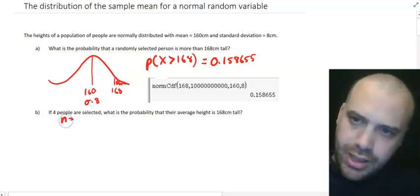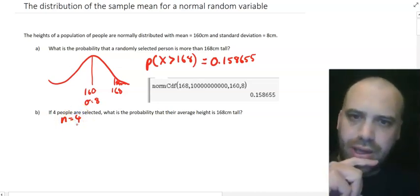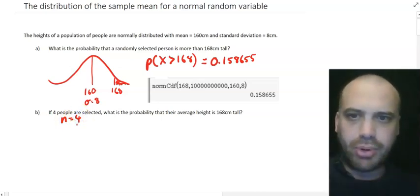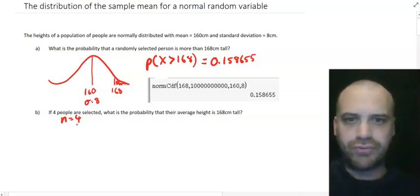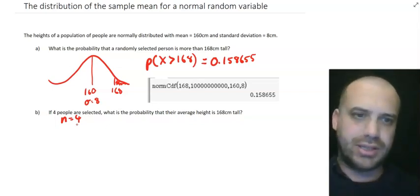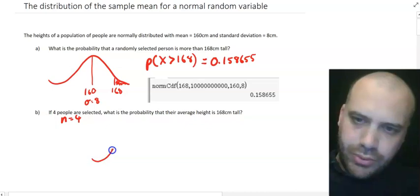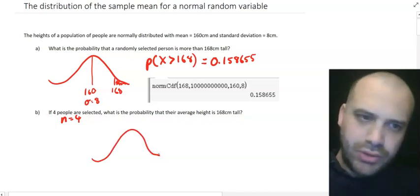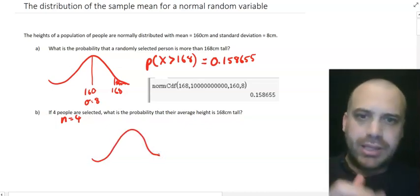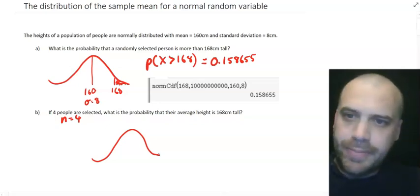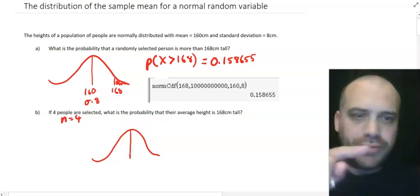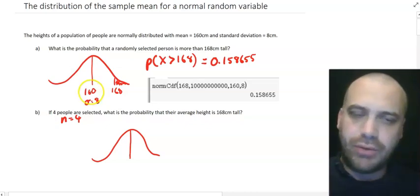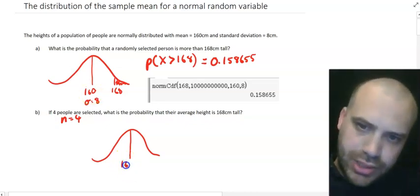So we have an N equal to four. And we want to know the probability that the average of those four people's heights is 168 centimeters. All right. We've got another normal distribution because sample means are normally distributed. We know that the mean of the sample mean is going to be equal to the mean of the population, 160.